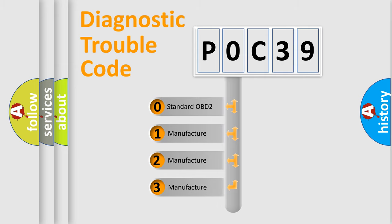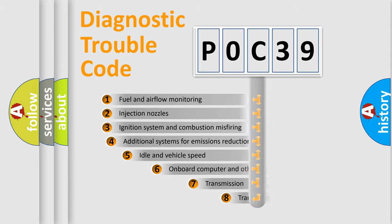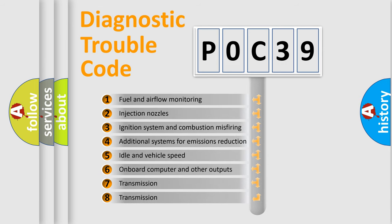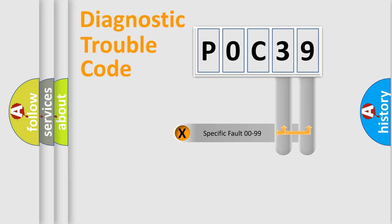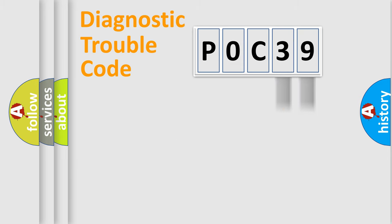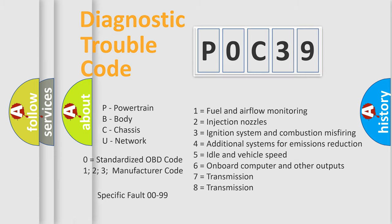If the second character is expressed as zero, it is a standardized error. In the case of numbers 1, 2, or 3, it is a manufacturer-specific error code. The third character specifies a subset of errors. This distribution is valid only for the standardized DTC code, where only the last two characters define the specific fault of the group — and only when the second character is zero.